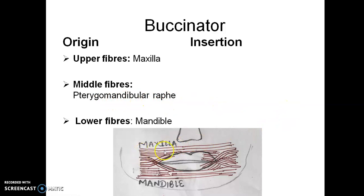The insertion: the upper fibers, you can see it is going straight to the upper lip only. The lower fibers, they will go to the lower lip. But you can see the middle fibers. The upper half of the middle fibers decussate or cross over to reach the lower lip, while the lower half of the middle fibers decussate to reach the upper lip.